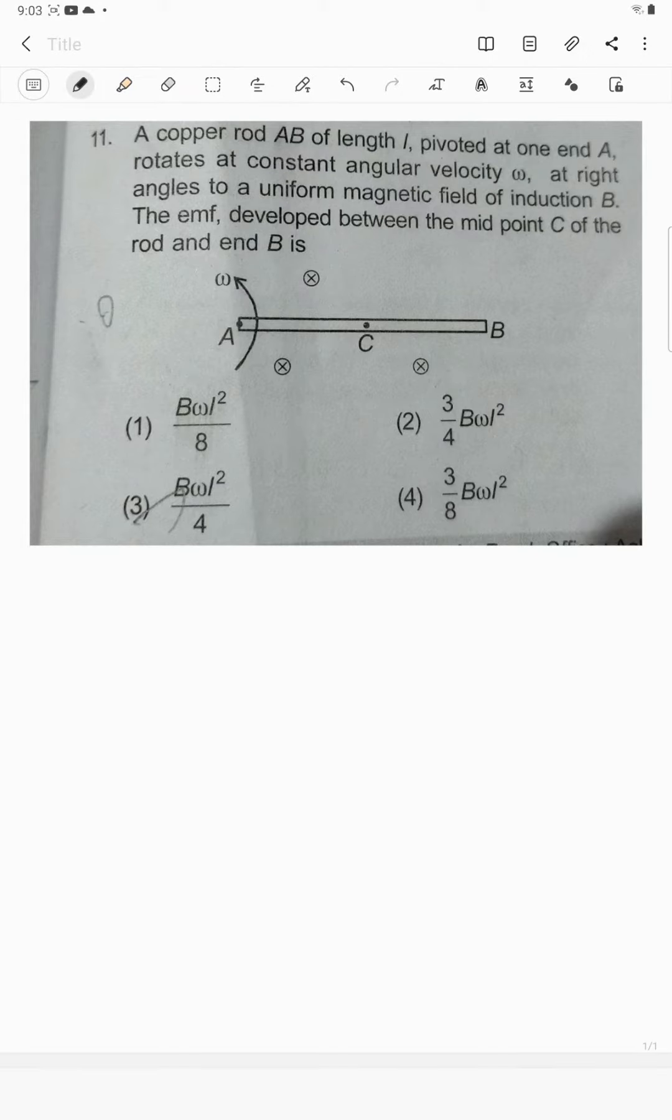This question: a copper rod AB of length L pivoted at one end A rotates at constant angular velocity omega at right angles to a uniform magnetic field of induction B. The EMF developed between the midpoint C of the rod and end B is...